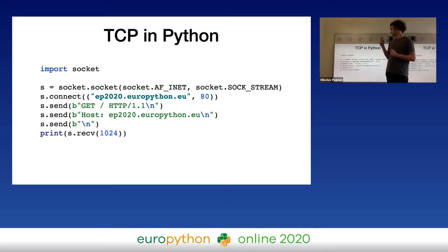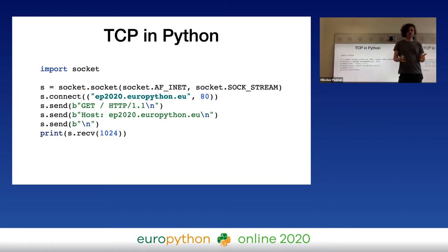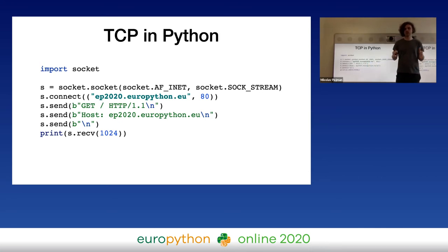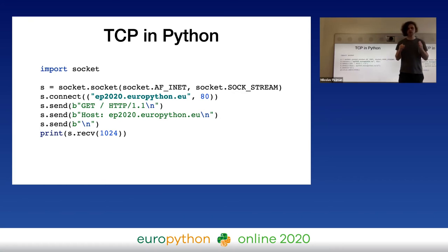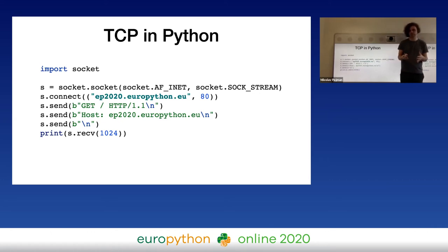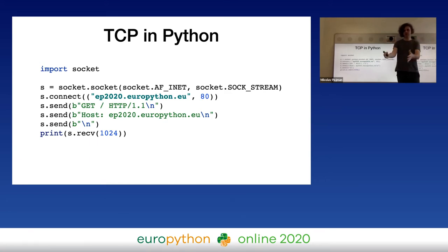TCP is implemented in your operating systems. Thanks to that, we can use TCP from almost any programming language, including Python, with just a few lines of code. If you are used to high-level APIs, then TCP sockets may look complicated or old-fashioned. But if you consider that these few lines of code get your data over the internet, I think it's pretty amazing.